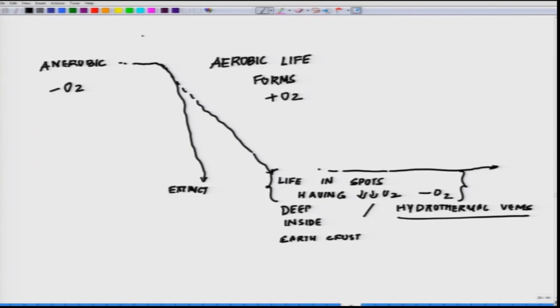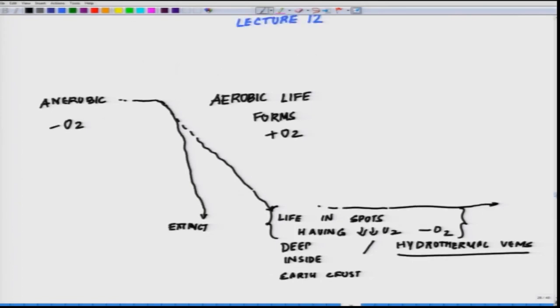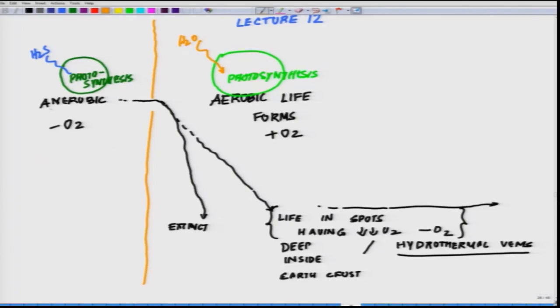So, if you now fit in the concept of photosynthesis out here. There are two kinds of photosynthesis. A photosynthesis which existed here and which was dependent on molecules like H2S and another set of photosynthesis which we see today which depends on water and this is that shift from anaerobic to aerobic life forms.